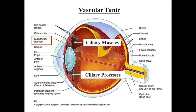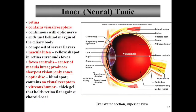The ciliary body is a thickened ring of tissue that encircles the lens, consisting chiefly of interlacing smooth muscle bundles called ciliary muscles, which control lens shape. The ciliary body is also responsible for secreting aqueous humor, the fluid that fills the cavity of the anterior segment of the eyeball. The iris, the colored part of the eye, acts as a reflexively activated diaphragm, allowing more or less light to enter through the pupil, which is a hole formed by the center of the iris. The neural tunic contains the retina, the optic disc, the optic nerve, the macula lutea, and the fovea centralis.